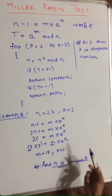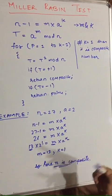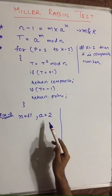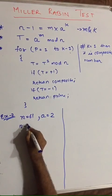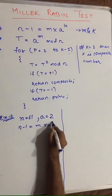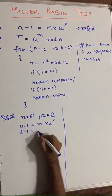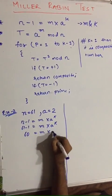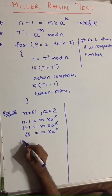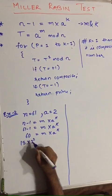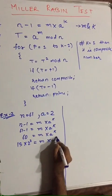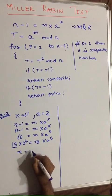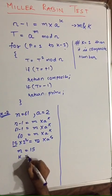Now let us move to another example where k will have a different value. In this second example we have n equal to 61 and a equal to 2. According to step one, n minus 1 is equal to m into 2 raised to k. So 61 minus 1 equals 60. We can divide it as 15 into 2 squared. So m is equal to 15 and k is equal to 2.